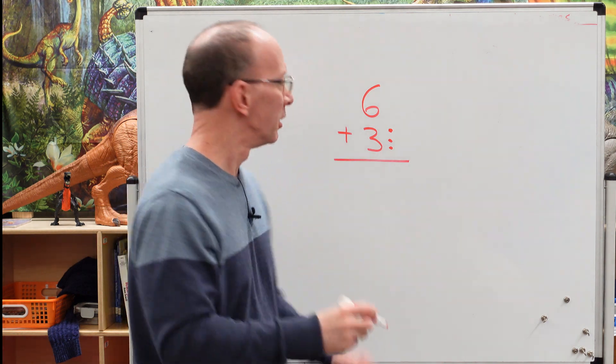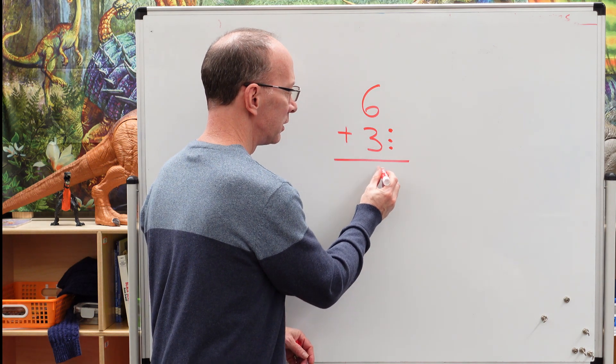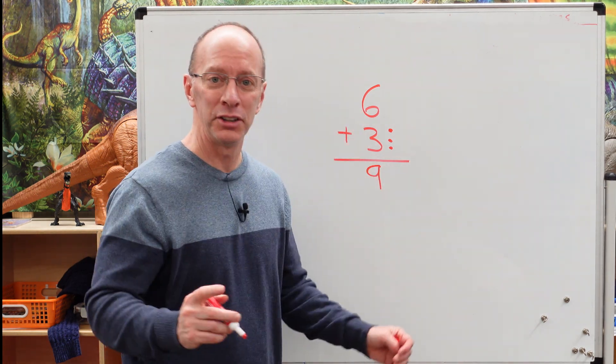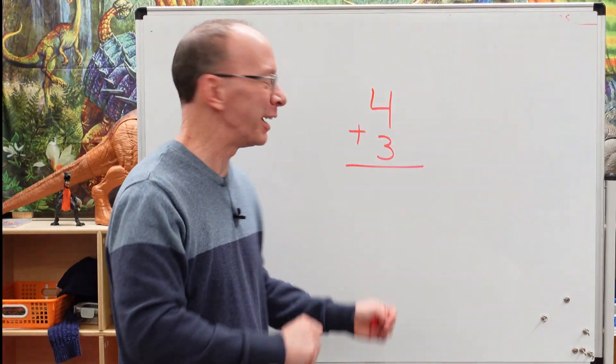Pretty easy, isn't it? So we'll put the nine right here. Six plus three equals nine. Ready to do another one? Yeah, let's do it. All right, welcome back.